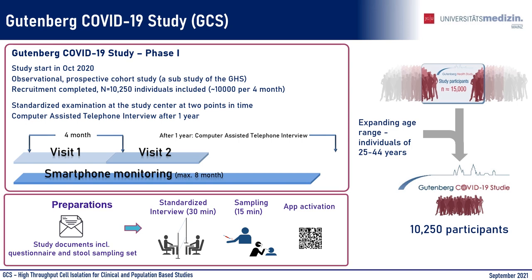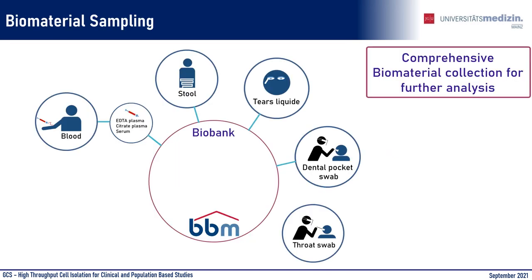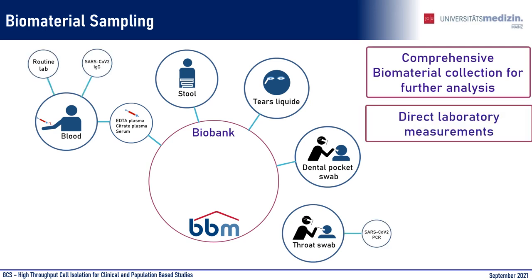Participants were interviewed at four-month intervals starting in October 2020 via questionnaires and a 20-minute personal interview at the study center. During the study center visit, biomaterial was collected, and an eight-month health monitoring phase was conducted via a questionnaire app. Different blood qualities — such as EDTA plasma, citrate plasma, serum — but also tear liquid and stool samples were collected. For stool samples, participants received collection kits beforehand and then brought the samples with them to the study center visit. A throat swab, followed by a PCR test and an antibody test, were used to determine both the general and acute infection status.